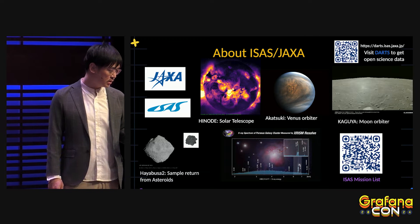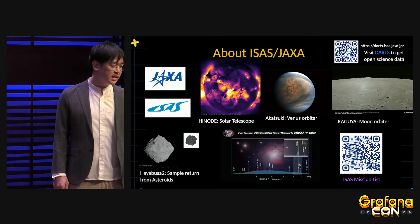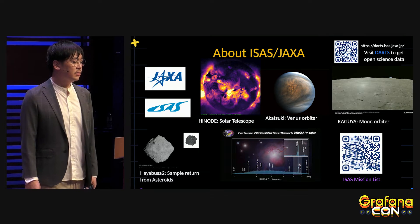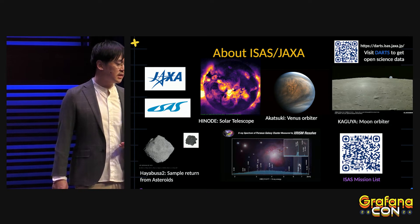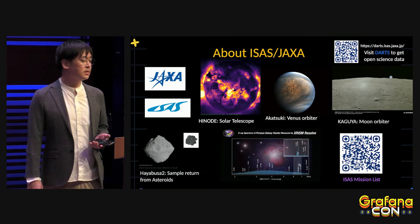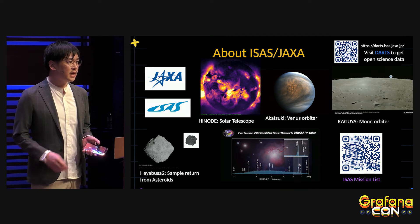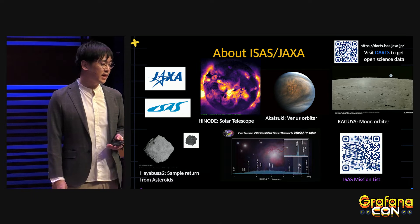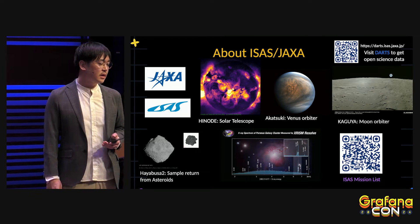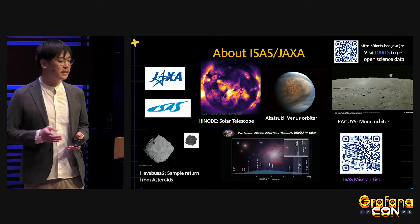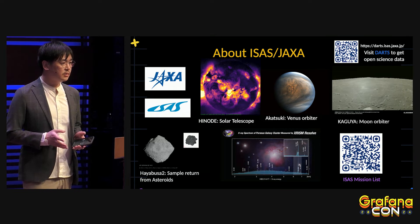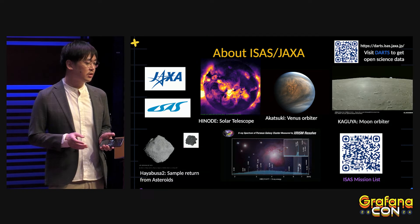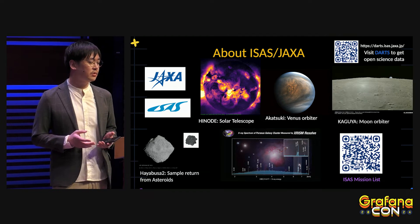Moving to my institution: JAXA is the space agency of Japan, and ISAS is the division of JAXA focused on space science. As you can see in this photo, we are operating many diverse types of satellites and probes.